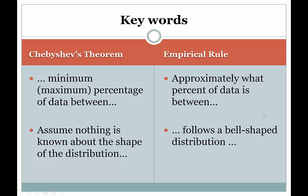How are these differences reflected in keywords? In Chebyshev's theorem problems, you're likely to see something about the minimum percentage of data between two given values, or the maximum percentage above or below a value. The theorem directly gives lower bounds, so you're looking for phrases like 'at least,' 'minimum,' or 'maximum.' Another giveaway for Chebyshev's theorem is that problems will often say 'assume nothing is known about the shape of the distribution,' hinting that you cannot assume a bell-shaped distribution and should not use the empirical rule.